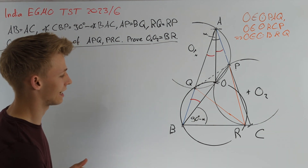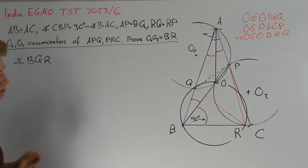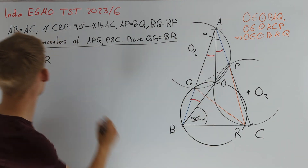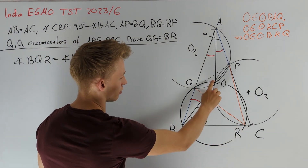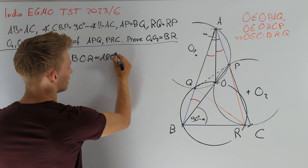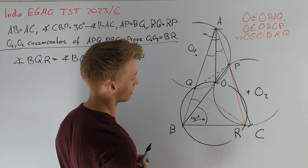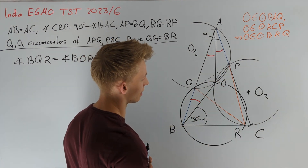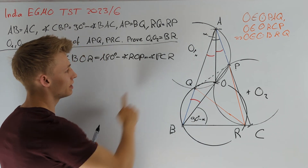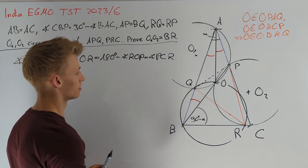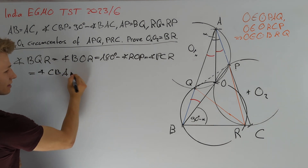This circle helps us with our next angle chase: we can now calculate angle OQR because angle OQR equals angle OOR — wait — angle OQR equals angle VOR. Then VOR equals 180 degrees minus angle ROP. Using the circle, 180 degrees minus angle ROP equals angle PCR. And angle PCR also equals angle CBA since ABC is isosceles, which equals 90 degrees minus alpha divided by 2.